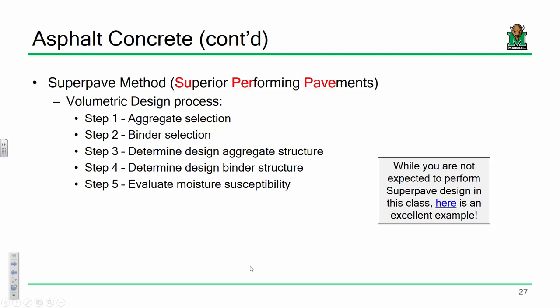A little bit about SuperPave — your volumetric design process should be somewhat familiar because we did volumetric design when we were proportioning concrete mixes. Proportioning asphalt concrete mixes using SuperPave is kind of similar — you're selecting your aggregate, selecting your binder, determining the design aggregate structure and binder structure, and then evaluating susceptibility to moisture. Aggregate structure refers to things like aggregate gradation, angularity, and surface characteristics — all critical for appropriate SuperPave design.